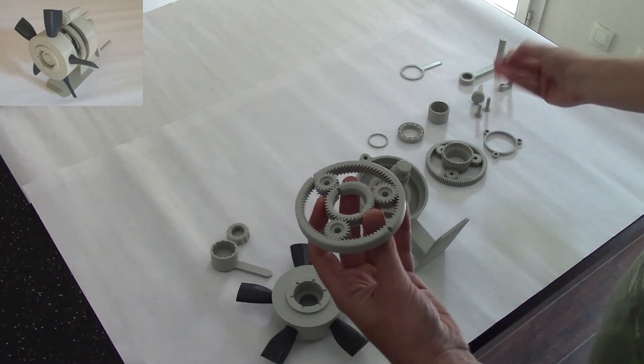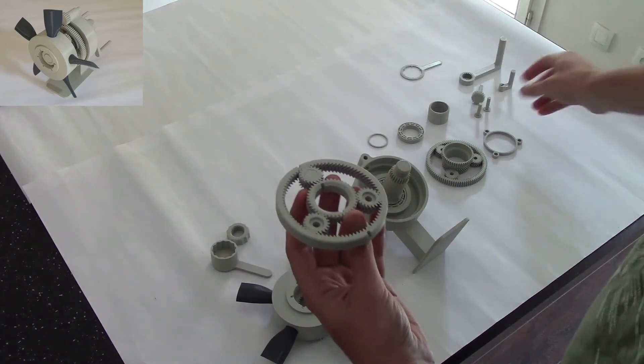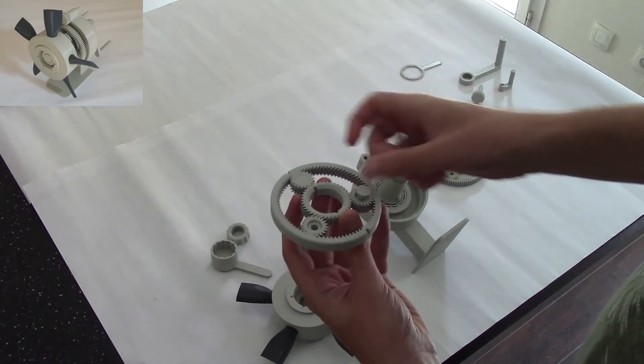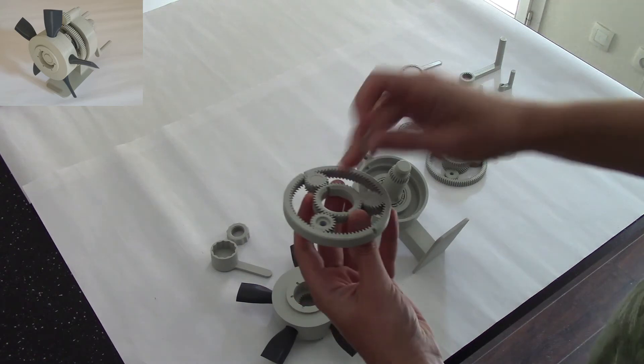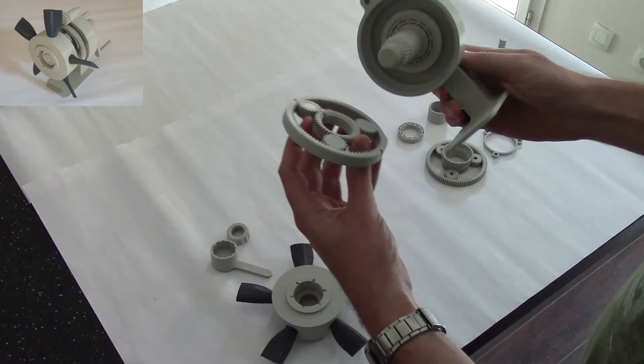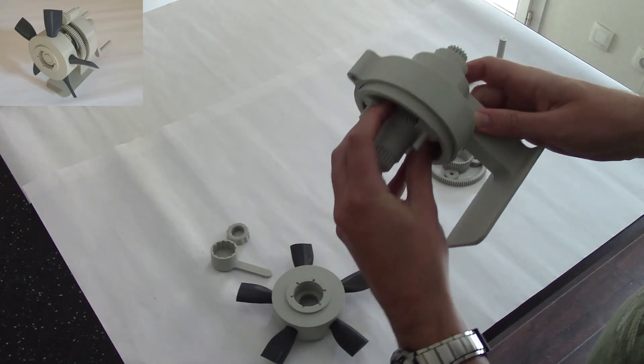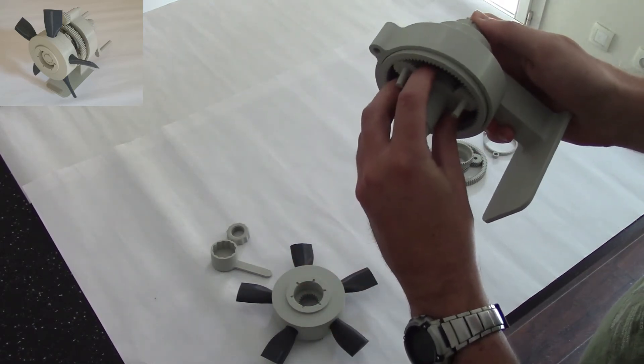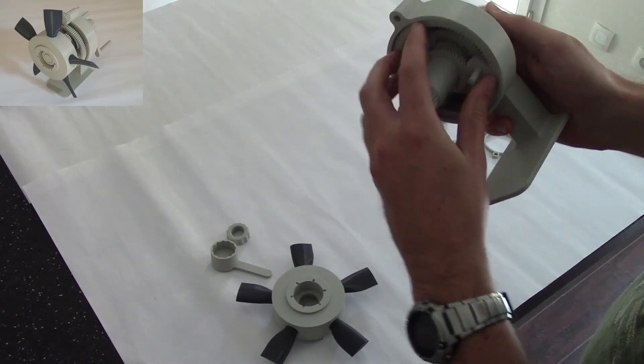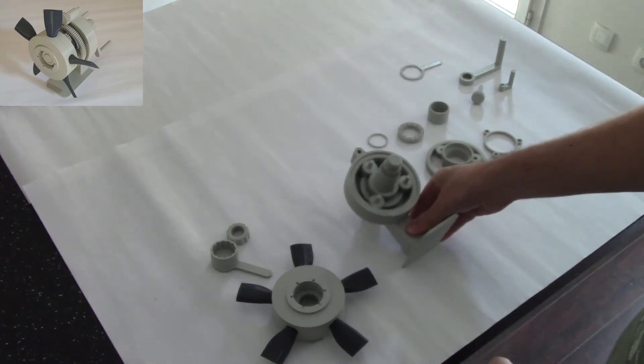But before we put it in, we take the planet axes and slide them in. Then we can go ahead and put it together. We need to find the keyway position. There it is. We can place it in the back now.